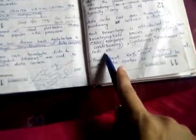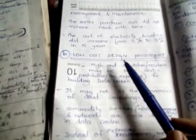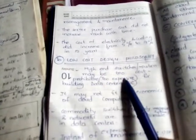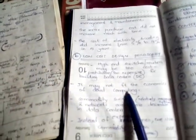The second factor is low-cost design philosophy. How can we design a low-cost data center? High-end switches or routers may be too cost-prohibitive for building data centers and may not fit the economics of cloud computing.